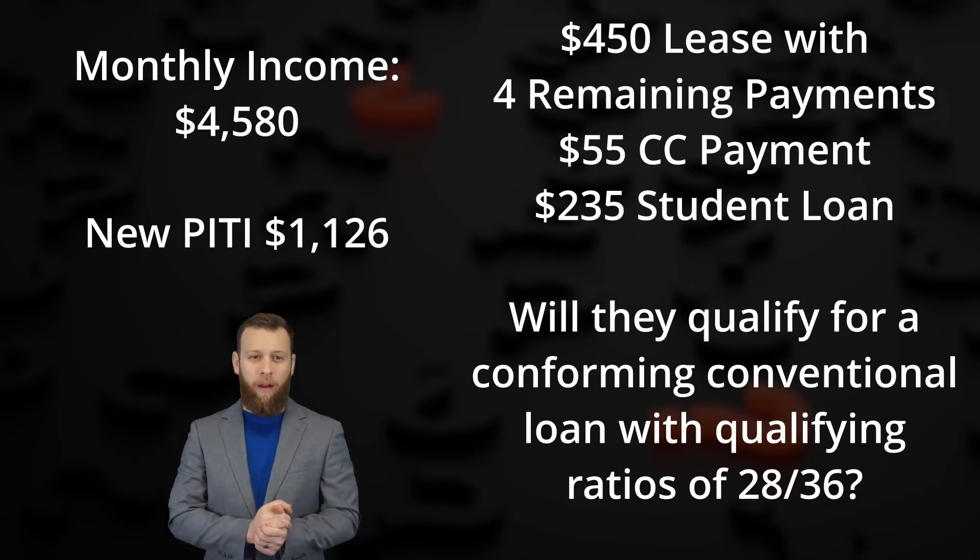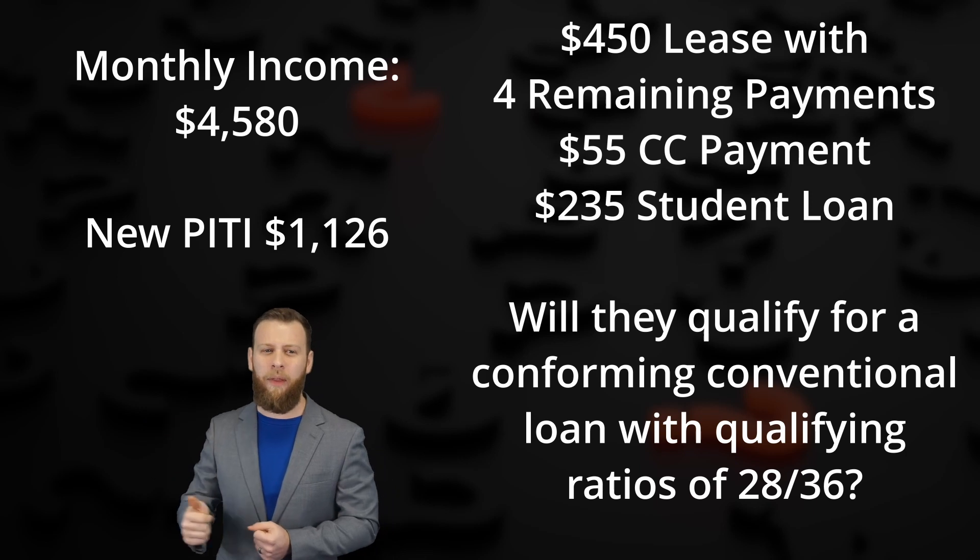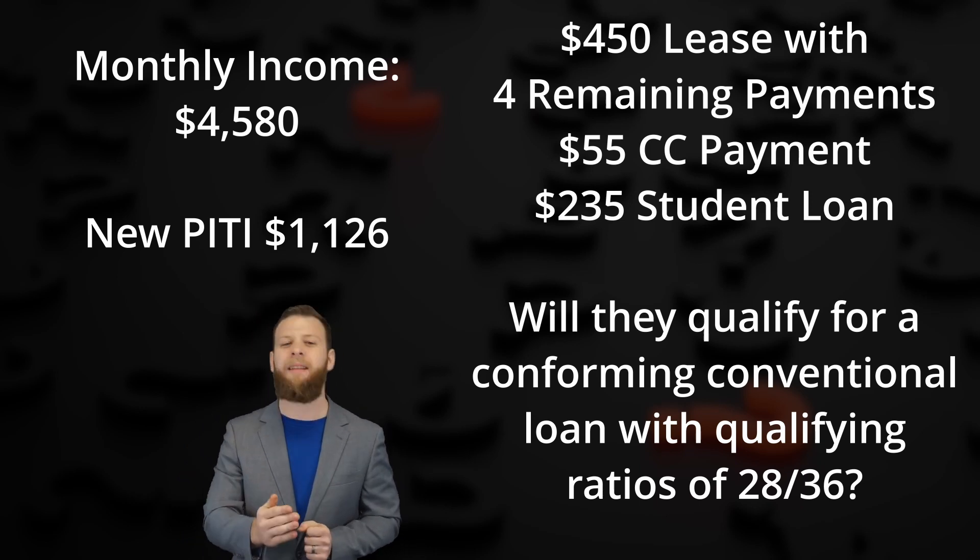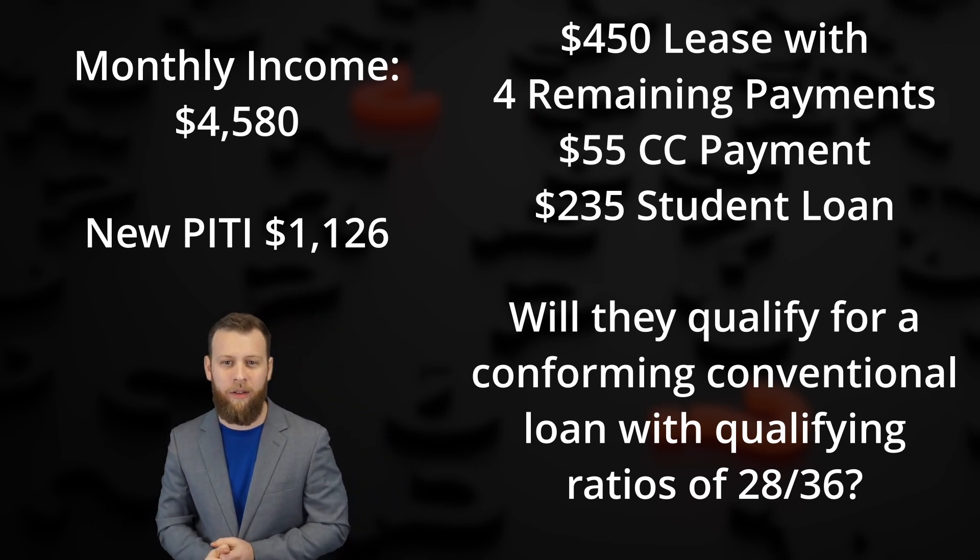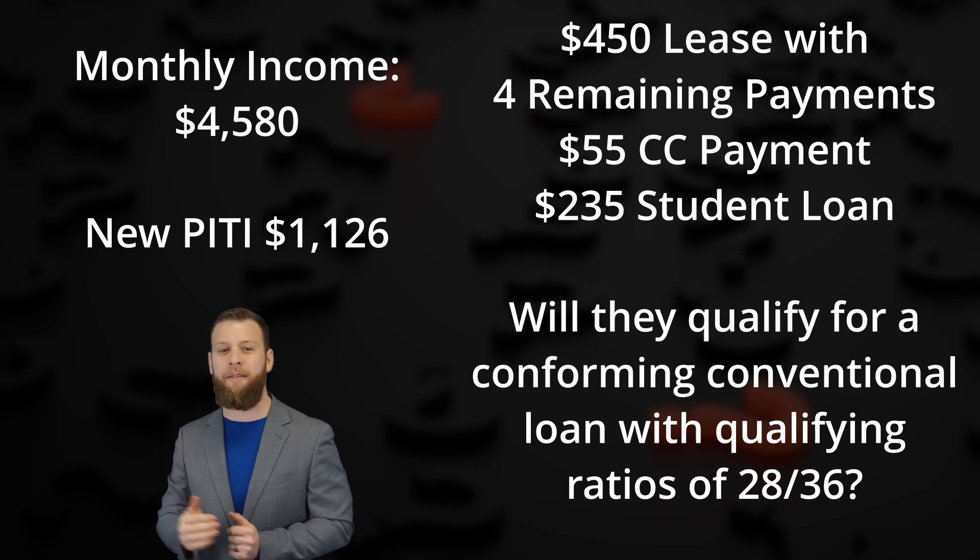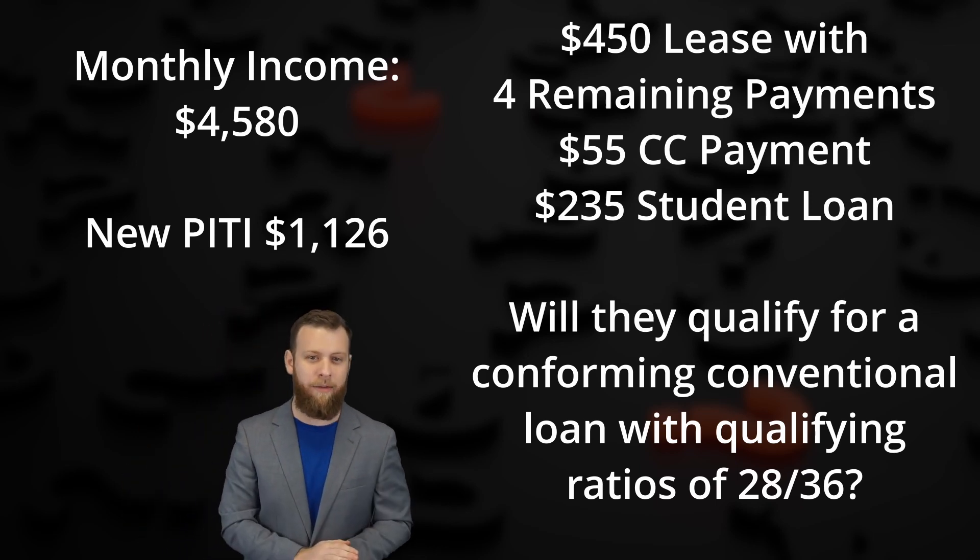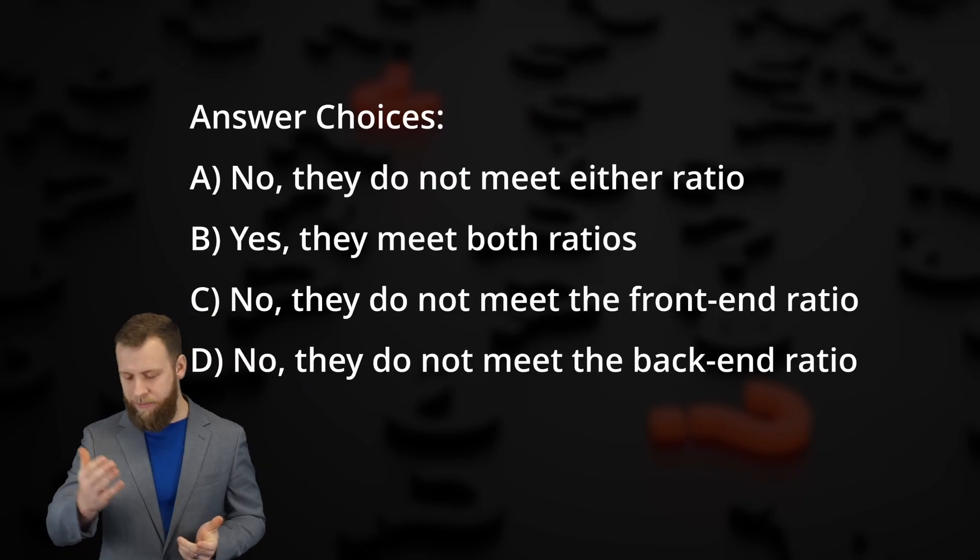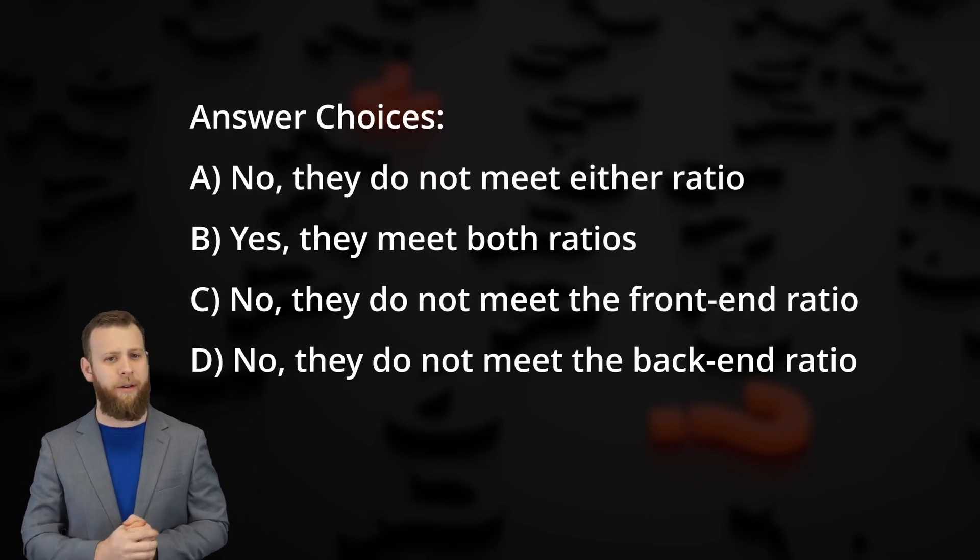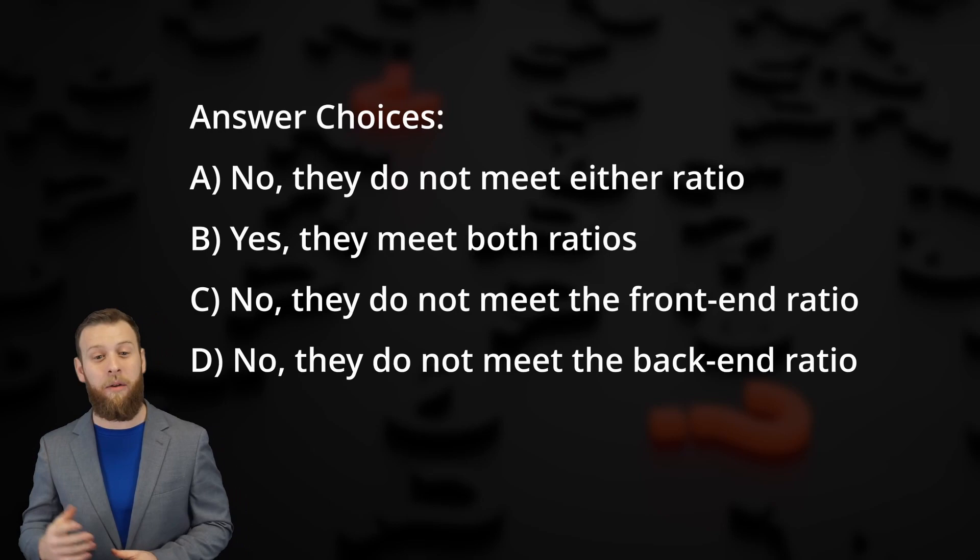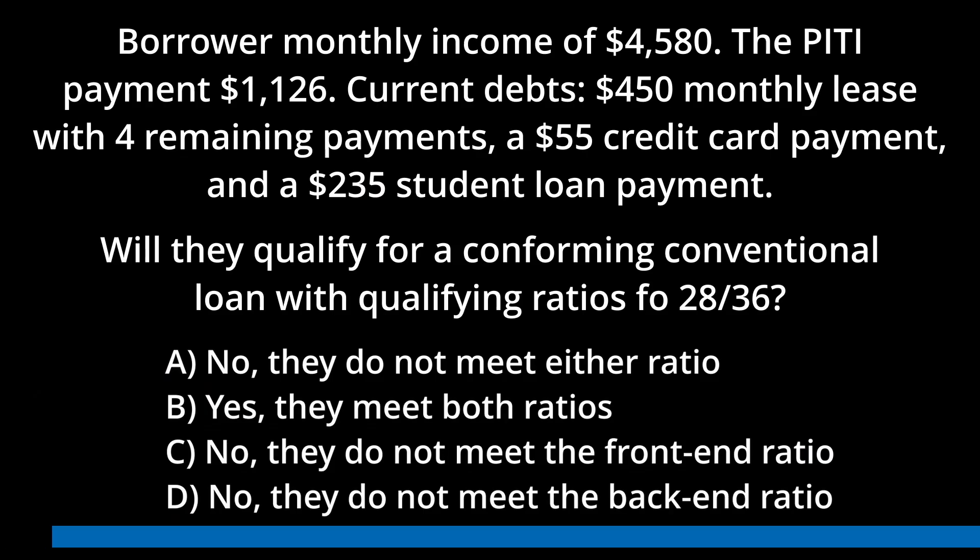Alright, second example we have. Here we have a borrower with a monthly salary of $4,580. They're applying for a conventional conforming mortgage with a PITI payment of $1,126. Their current debts are a $450 lease payment that they have four months left on, a credit card payment of $55, and a student loan payment of $235. Will this borrower qualify for the conforming conventional loan with qualifying ratios of 28/36? Options are A they don't meet either ratio, B they meet both ratios, C they do not meet the front end ratio, or D they do not meet the back end ratio. Once again, I want to suggest that you pause here just to work out the answer on your own and hit resume whenever you're ready.